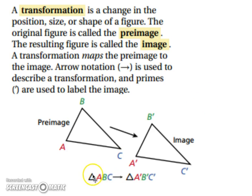And our arrow notation for this case would be triangle ABC, with a little arrow showing that you're going to triangle A prime, B prime, C prime.